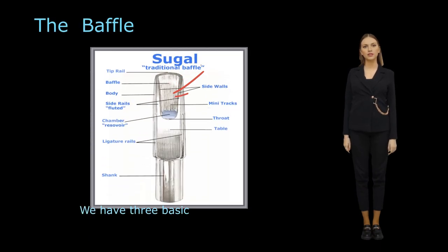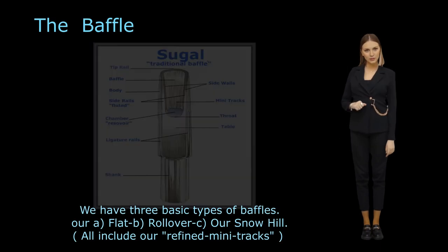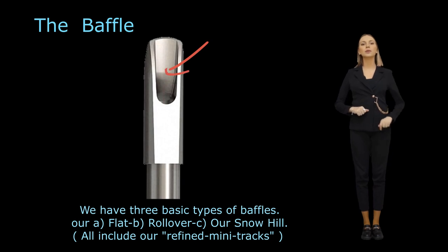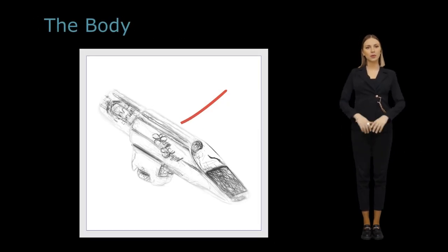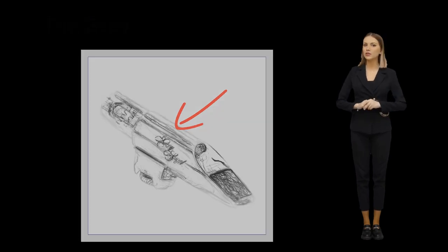The baffle is the section located directly behind the tip rail and determines the brightness or darkness of the mouthpiece, as well as influencing a sizzle or buzz. The body is found in the middle part of the mouthpiece, usually where the ligature is.